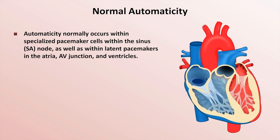This type of automaticity normally occurs within specialized pacemaker cells within the sinus node, also called the SA node for sinoatrial, as well as within latent pacemakers spread throughout the atria, AV junction, and ventricles. The normal intrinsic rates of each pacemaker site depends upon its anatomic location within the heart. In general, the higher or more proximal the pacemaker is, the faster the intrinsic rate.